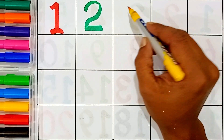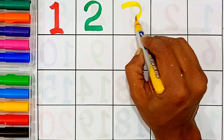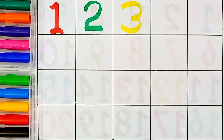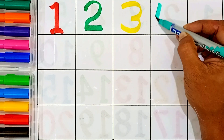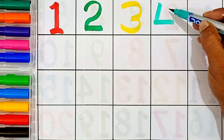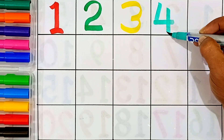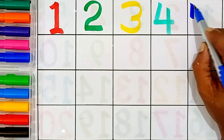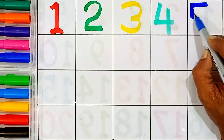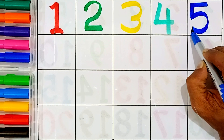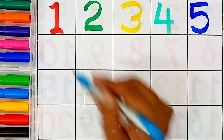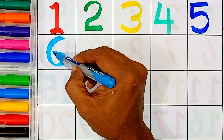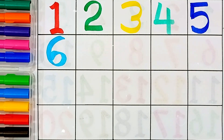3 — this number name is 3. 4 — this number name is 4. 5 — this number name is 5. 6 — this number name is 6.